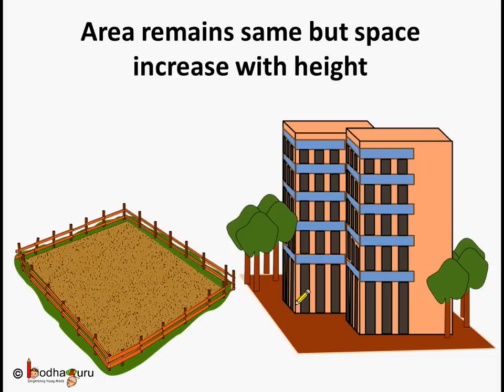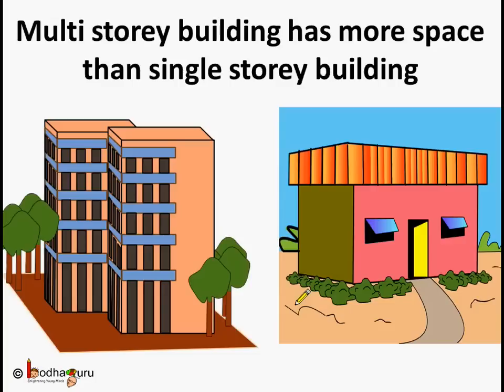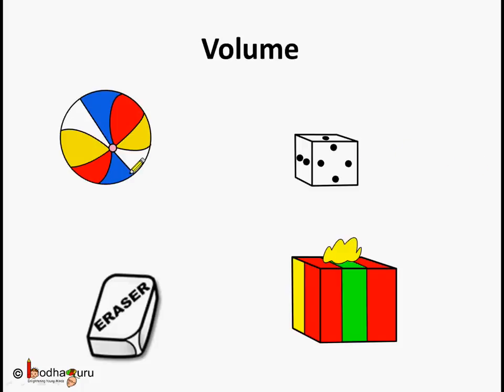So how height is related to the space of building we will see in the next lesson. But what did you understand? That multi-story building has more space than the single story building or you can also say the volume of the multi-story building is more than that of the single story bungalow which was built on the same area of land. So now you know what is volume.